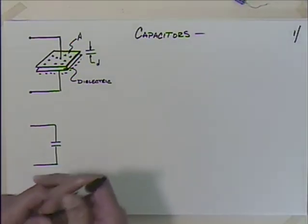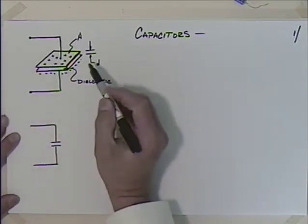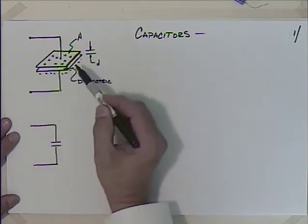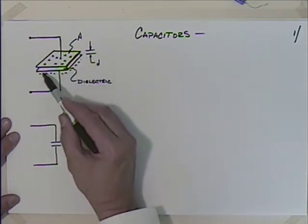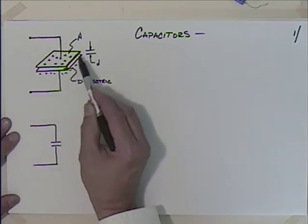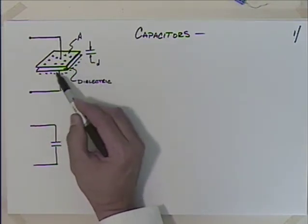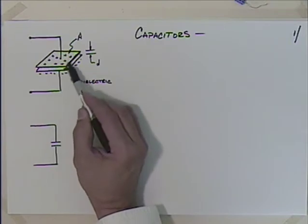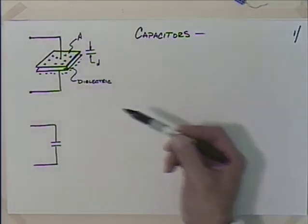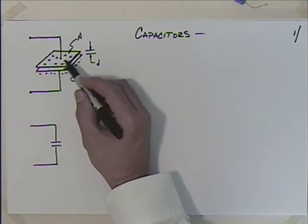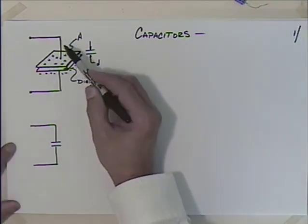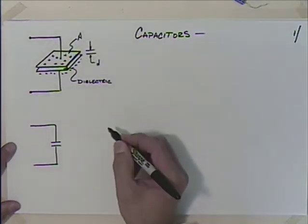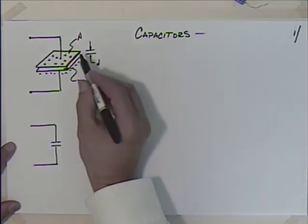A capacitor consists of two charged surfaces separated by some distance. We usually think of a couple of parallel plates. Sometimes we change the geometry significantly — we could put some dielectric material in between, maybe a paste or wax paper, then take a couple of foil surfaces for the plates and roll it all up. So sometimes they will have very different geometry. We're going to put this whole thing into a black box and look at the terminal effects.